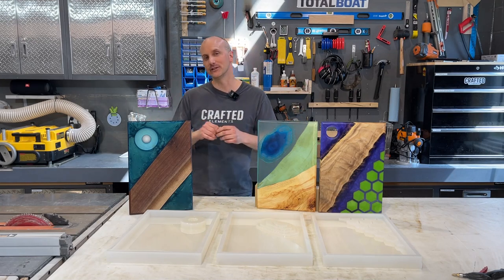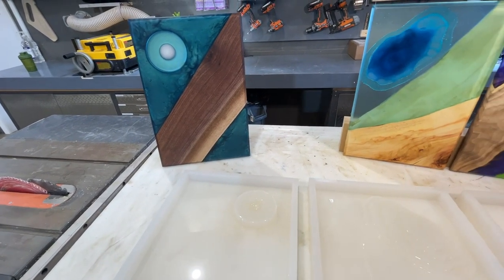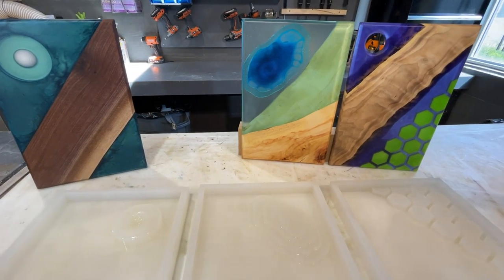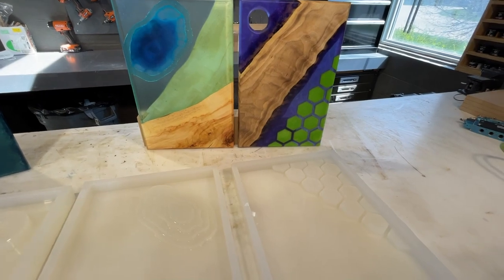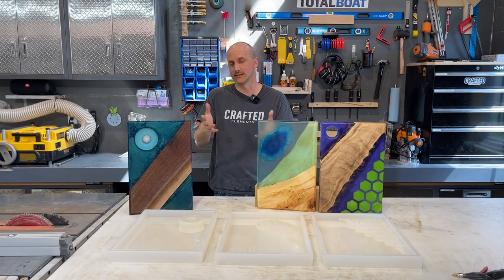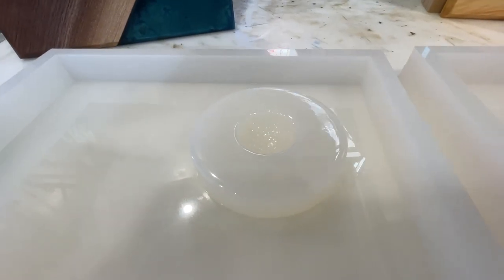All these boards that you're seeing right here are made only with these molds and resin and wood of course. No CNC machine, no laser cutters, no templates, nothing. All the features in these are made just with the resin and with the molds because these molds have built-in reliefs or inlays or embossed designs.